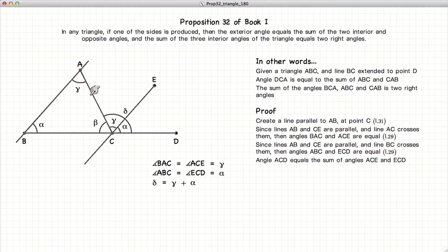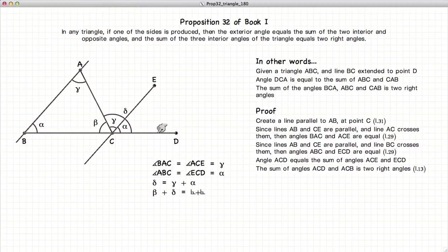Now, if we look at our angle ACD, it's equal to delta, which is equal to gamma plus alpha. If we look at our line BD, we know that beta plus delta is equal to two right angles, according to Proposition 13.